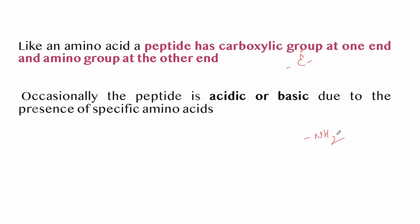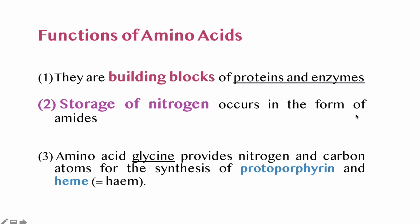Like an amino acid, a peptide has a carboxyl group at one end and an amino group at the other end. Occasionally a peptide is acidic or basic due to the presence of acidic or basic amino acids — if it has an extra carboxylic group the peptide is acidic, and if it has an extra amine group the peptide is basic.